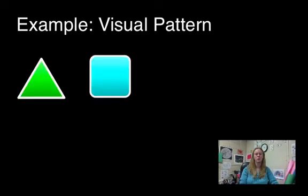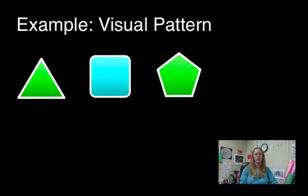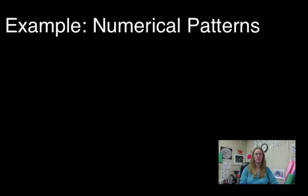As an example of this we could have a visual pattern where you have a series of symbols and you have to figure out the next symbol in the line, or you could also have a series of numbers like 1, 3, 5 and then you have to figure out the next one.